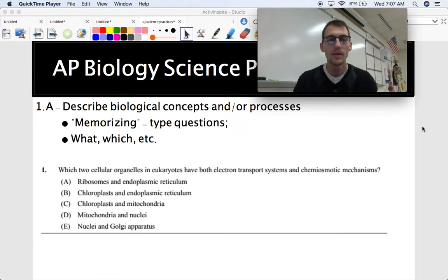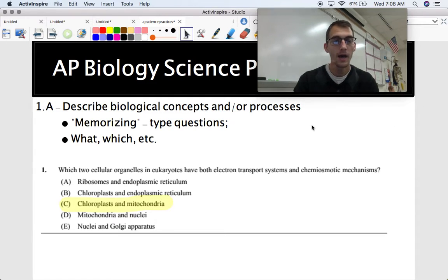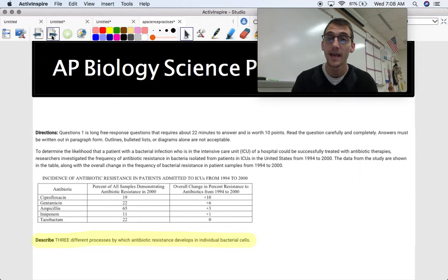And here's an example of a multiple-choice question from the AP exam that's defined as one point A skill. So which two cellular organelles and eukaryotes both have electron transport systems and chemiosmotic mechanisms? I'm going to be putting a lot of these questions, giving an example from an AP exam of each of these science practices. So if you want to pause the video at certain spots to try and answer these questions yourself, you're more than welcome to do that. And I'm going to try to go through each of the answers. So here's a multiple-choice question. Which two cellular organelles both have an ETC? That would be the chloroplasts and mitochondria, because they get light reactions and chloroplasts, and you have the mitochondrial matrix, or the mitochondrial cristae have the electron transport chain, oxidative phosphorylation.